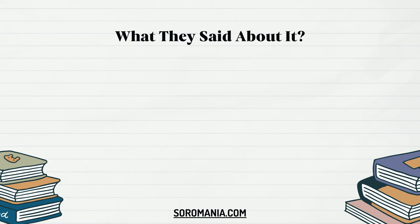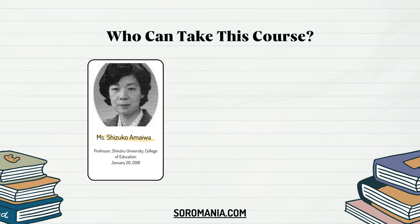In Japan, academic researchers have published many articles about the Soroban and its importance in the educational system. Ms. Shizuko Ameiwa, professor at Shinshu University College of Education, published an article on January 20, 2001, titled The Ripple Effects and the Future Prospects of Abacus Learning. She states: I have been engaged in research concerning the abacus for many years from the perspective of a psychologist. My research findings show that abacus study not only improves the ability to calculate both on the abacus and mentally, but also provides a beneficial ripple effect on other disciplines. You can find the whole article in the description below.